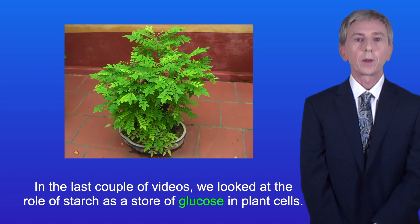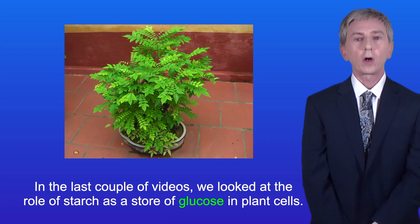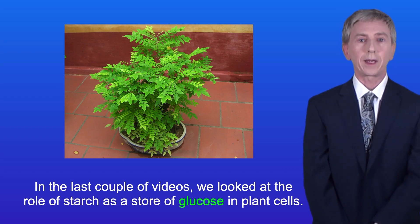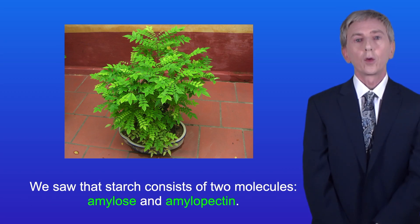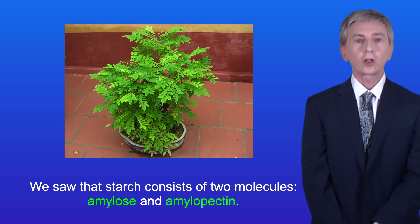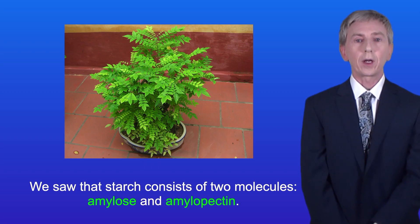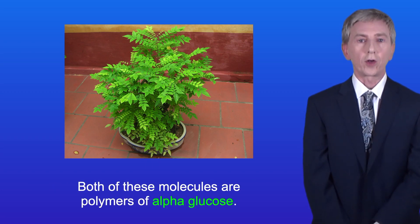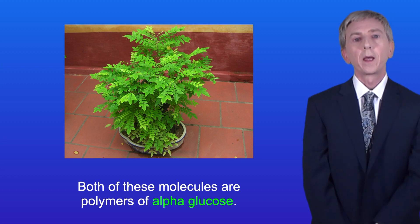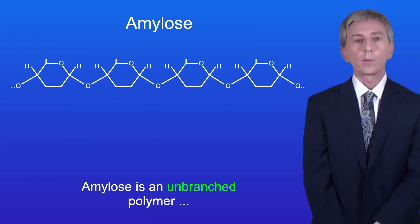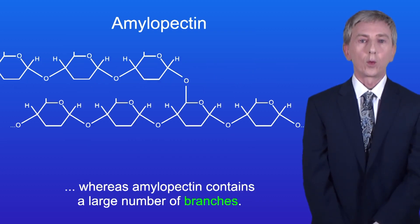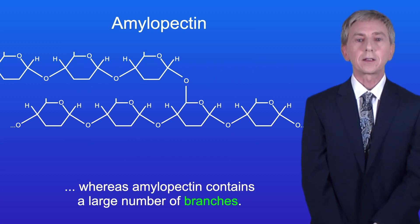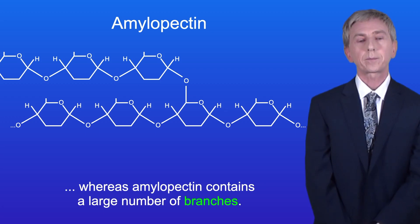In the last couple of videos we looked at the role of starch as a store of glucose in plant cells. We saw that starch consists of two molecules, amylose and amylopectin. Both of these molecules are polymers of alpha glucose. Amylose is an unbranched polymer whereas amylopectin contains a large number of branches.